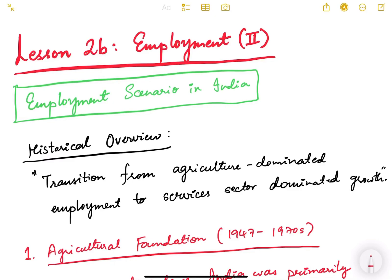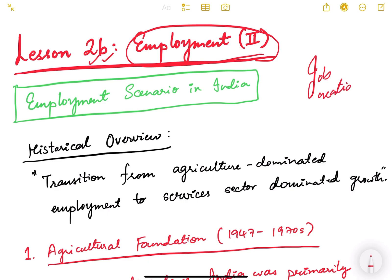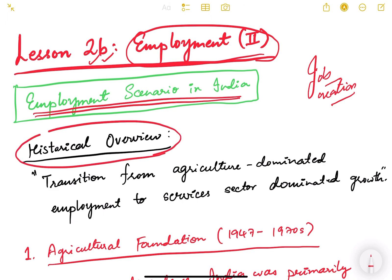Hello friends and welcome back to lesson 2. This is the second video of lesson 2 and we are discussing employment in this lesson. In the previous video we studied about job creation, which is a very important activity in a developing economy like India — the various challenges for job creation and the probable solutions. We will now study the employment scenario in India with a historical overview of how it changed right from the time of independence.